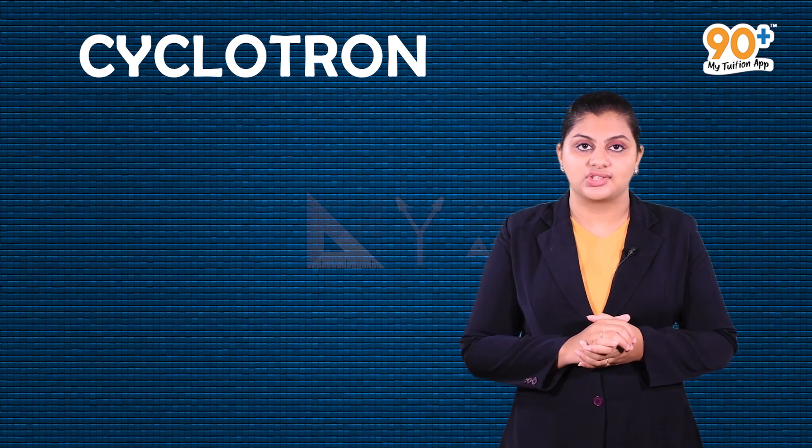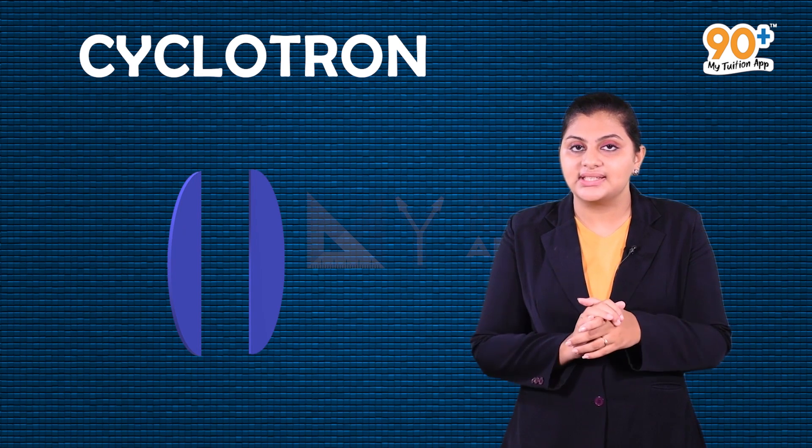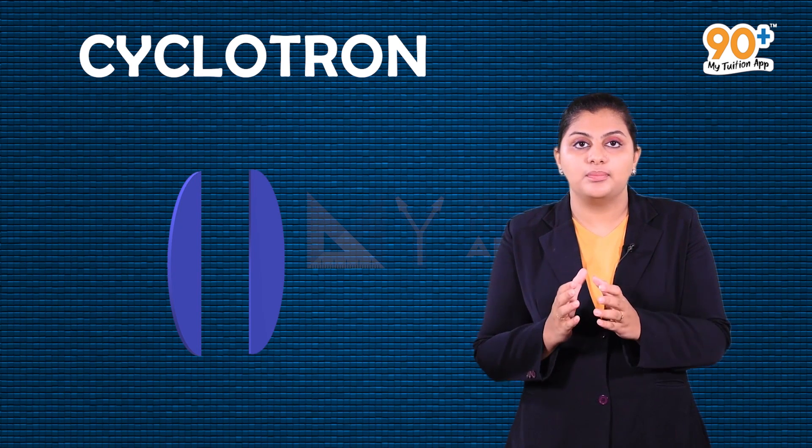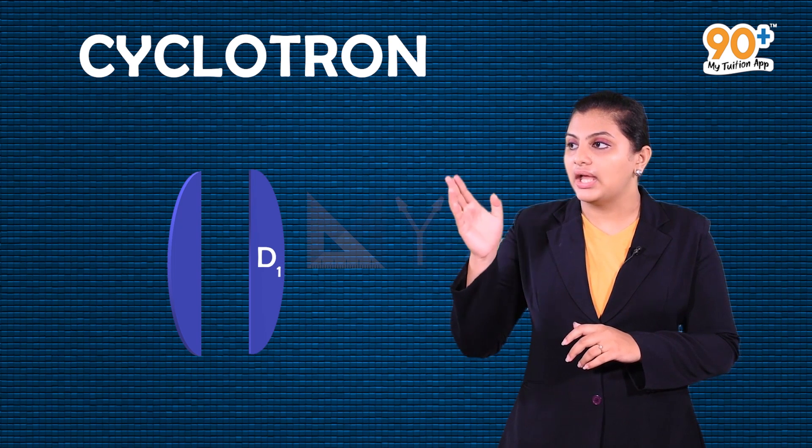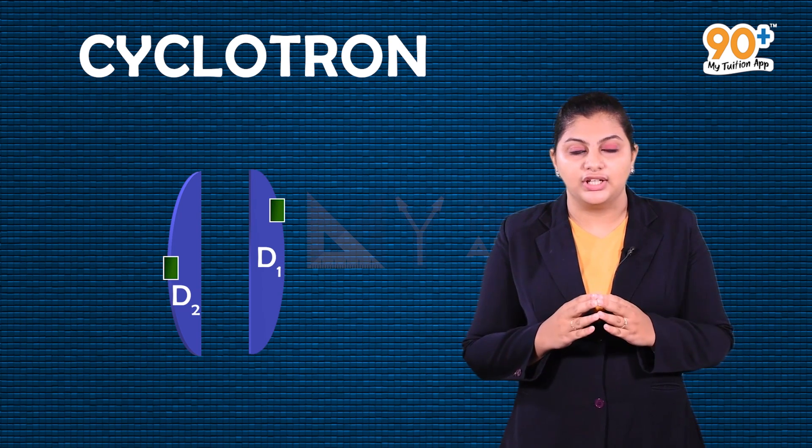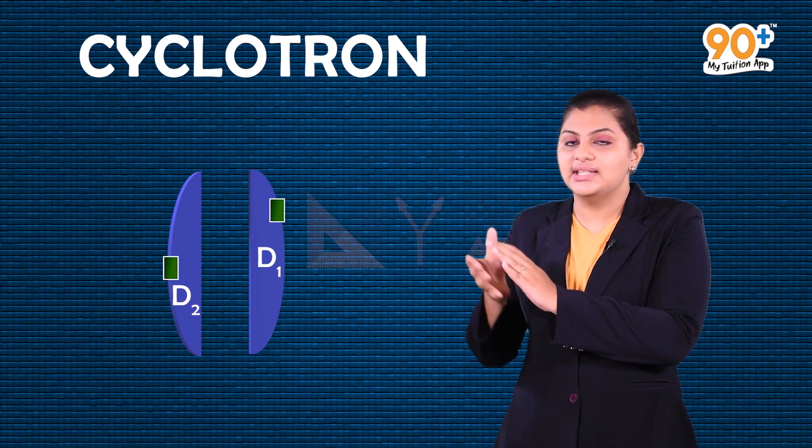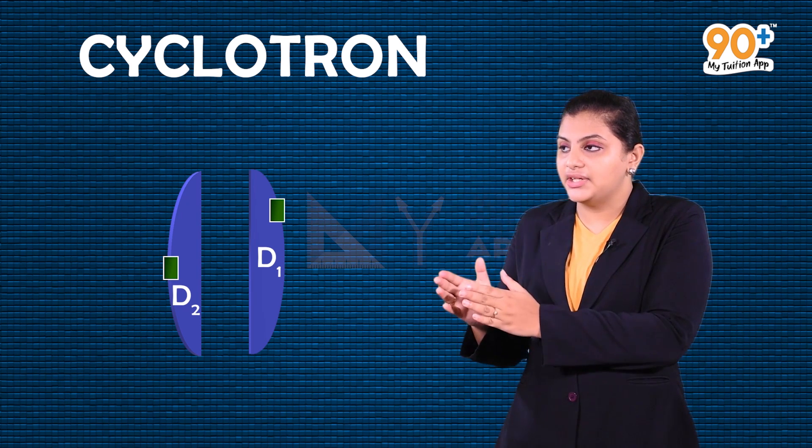Let's take a look at the construction. The main components are semi-circular, disc-like shaped metal containers, D1 and D2, called Ds. These two Ds are separated at the diameter edge by a gap.